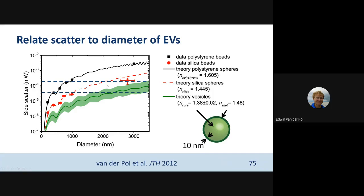Another thing you can do is look at your detection limit — what is the smallest vesicle we could detect with this flow cytometer? The detection limit was somewhere around the smallest silica bead we could detect, of which we could only detect half. So we knew we were very close to the detection limit of this instrument. Assuming that was the real detection limit, this flow cytometer could measure vesicles from about 300 nanometers to maybe 600 nanometers, depending on the exact refractive index of the vesicles. Knowing your limit means you know what you're studying.